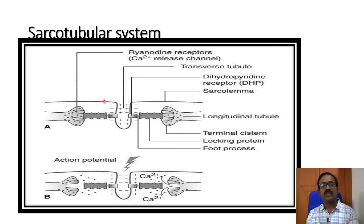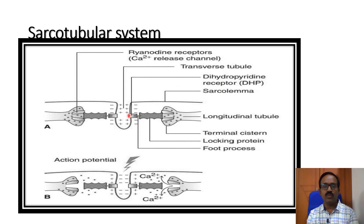Once the action potential reaches the sarcolemma, it passes through the T-tubule. The T-tubule, or transverse tubule, contains the dihydropyridine receptor. The dihydropyridine receptor is the voltage-sensitive calcium channel. When the action potential travels, it opens the voltage-sensitive calcium channels.